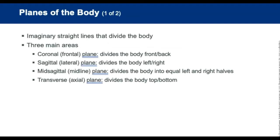Body planes are imaginary straight lines that divide the body. There are three main areas depending on how the body is divided. The coronal, or frontal plane, divides the body's front and back. The sagittal is a lateral plane that divides the body's left and right side. The mid-sagittal is a midline — a special type of sagittal plane where the body is cut in half, leaving equal left and right halves. The transaxial plane divides the body's top and bottom.